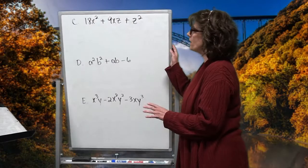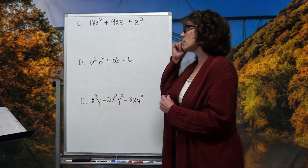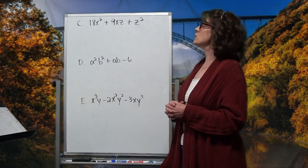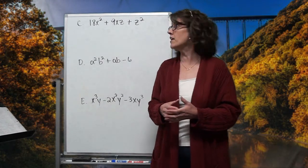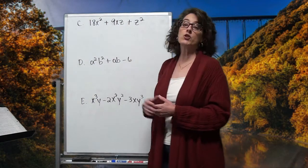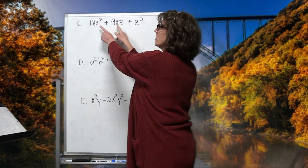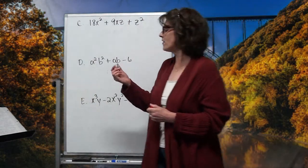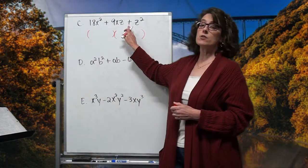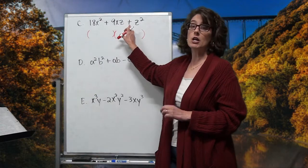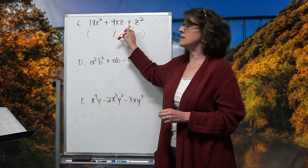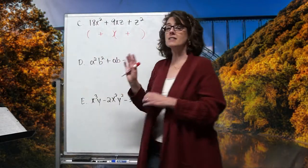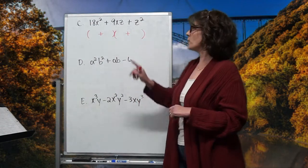Let's look at a couple more examples that have extra variables. Will extra variables mess up the process? Not at all. Looking at 18x squared + 9xz + z squared, I still try common monomial factoring first. Looking at 18, 9, and 1, there's nothing common I can divide out. I can divide z's out of the first two terms but not the last, and x's out of the first two but not the last. So there's nothing common to divide out — I head straight for the double parenthesis. The back sign is a plus, so the signs are the same. The middle sign tells me they're both pluses.